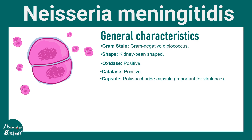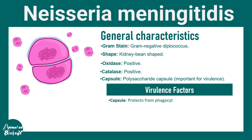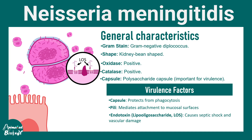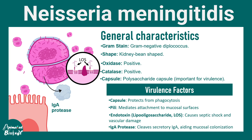The polysaccharide capsule is really important for their virulence. Virulence factors involve the capsule, which protects them from phagocytosis. They have pili which help them attach to many surfaces. They have endotoxin such as lipo-oligosaccharide — note that this is lipo-oligosaccharide and not lipopolysaccharide, which is present in many other bacteria. They also produce a protein known as IgA protease, which clips off secretory IgA and aids them in colonizing the mucosa.